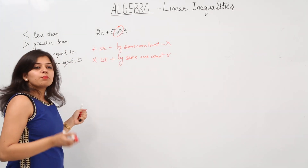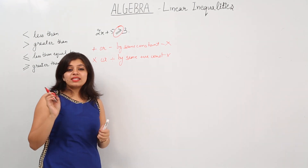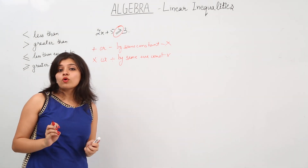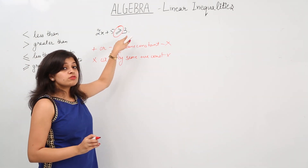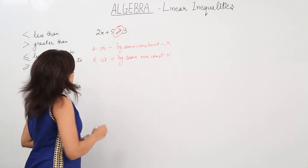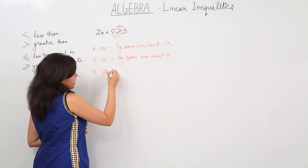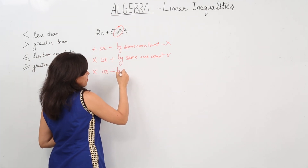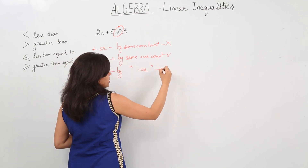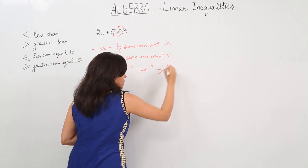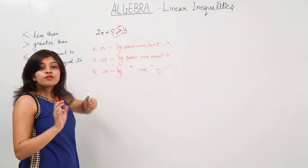Whereas if we multiply or divide the LHS and RHS by the same negative constant, then the sign of the inequality is reversed. That means multiplying or dividing by the same negative constant reverses the sign of the inequality.